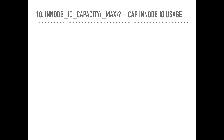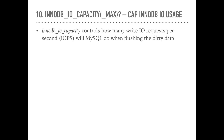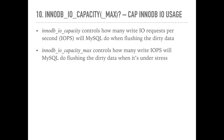InnoDB IO capacity and InnoDB IO capacity max: innodb_io_capacity controls how many write I/O requests per second MySQL will do when flushing dirty data. innodb_io_capacity_max controls how many write I/O operations per second MySQL will do when flushing dirty data under stress. This has nothing to do with foreground reads performed by SELECT queries — for reads, MySQL will do the maximum number of I/O operations possible to return results as soon as possible. For writes, MySQL has background flushing cycles and will use no more than innodb_io_capacity I/O operations per second during each cycle.